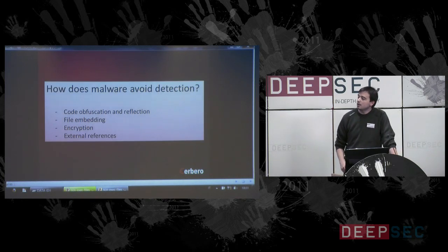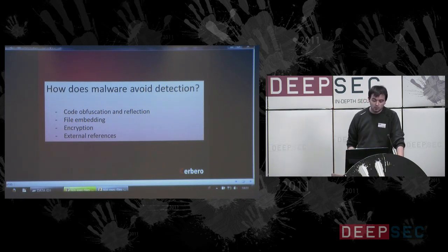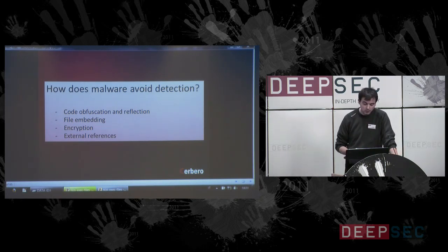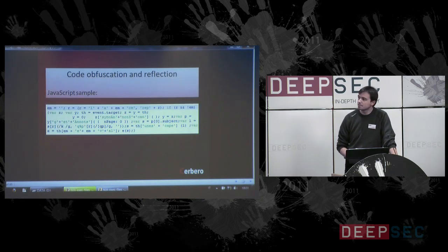How does malware avoid detection? There are various ways. Some ways are code obfuscation and reflection, file embedding, encryption, and external references.